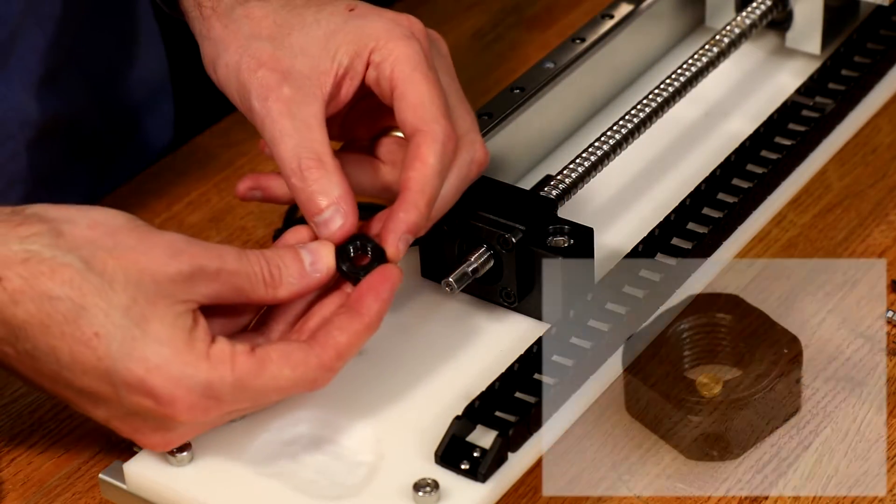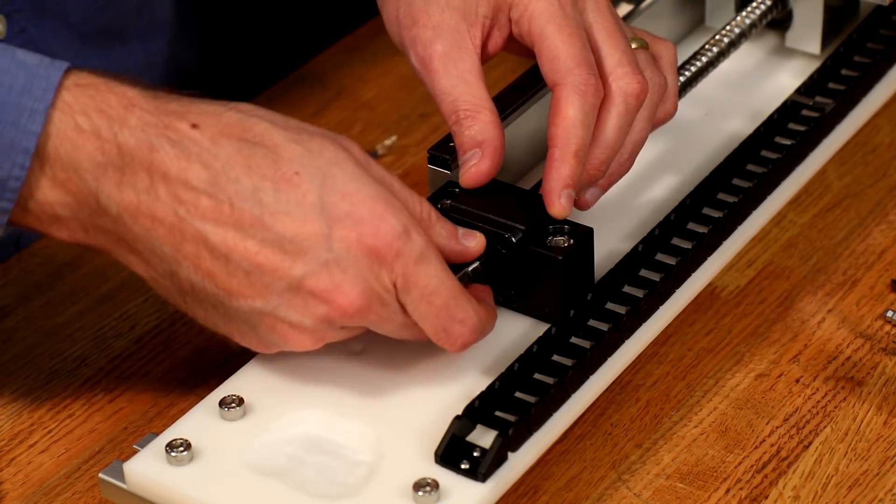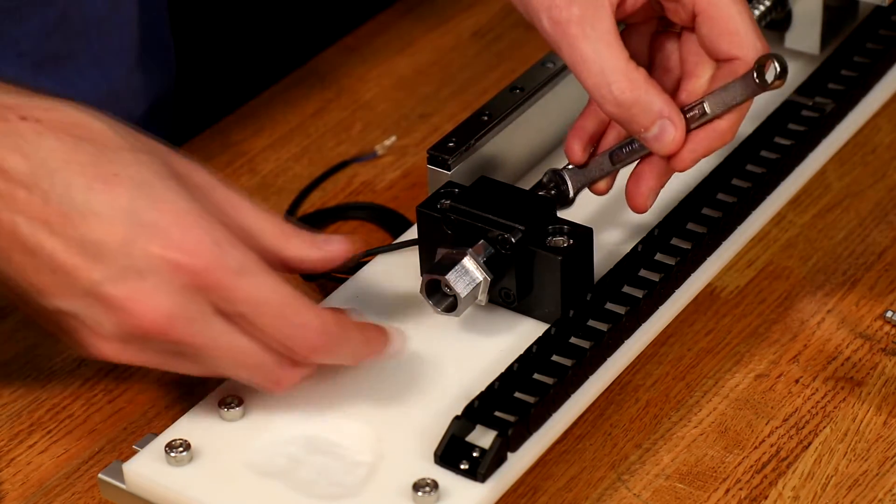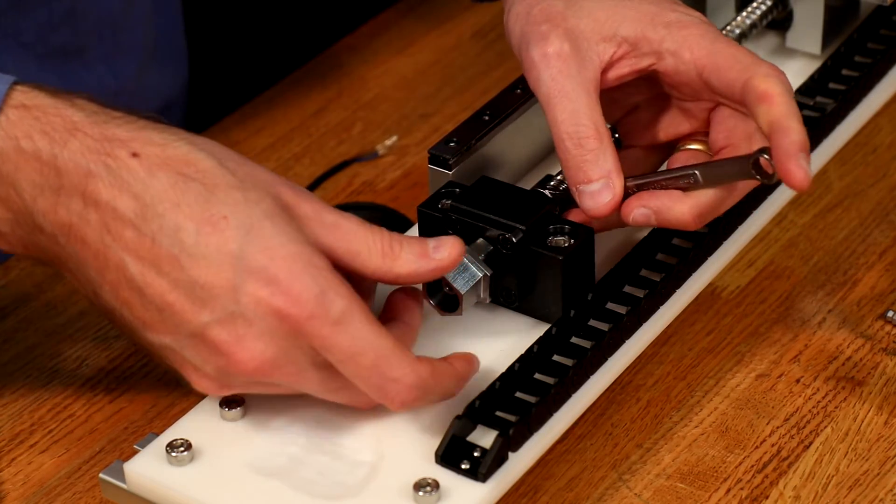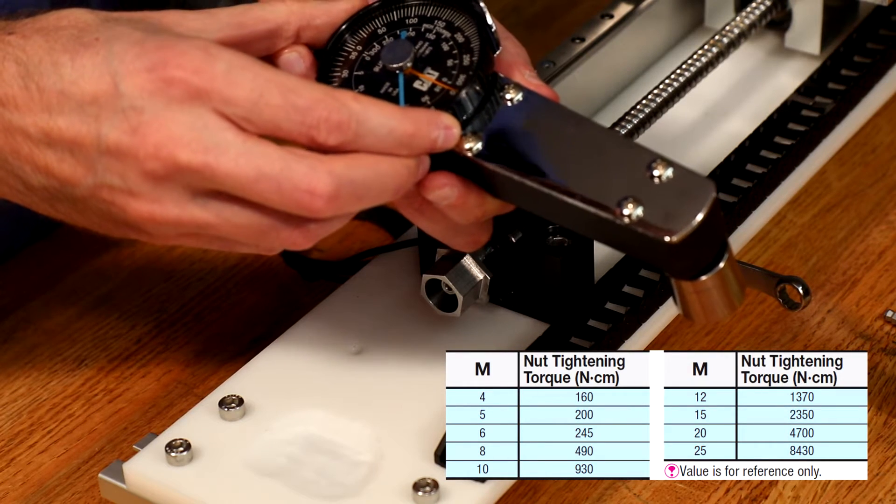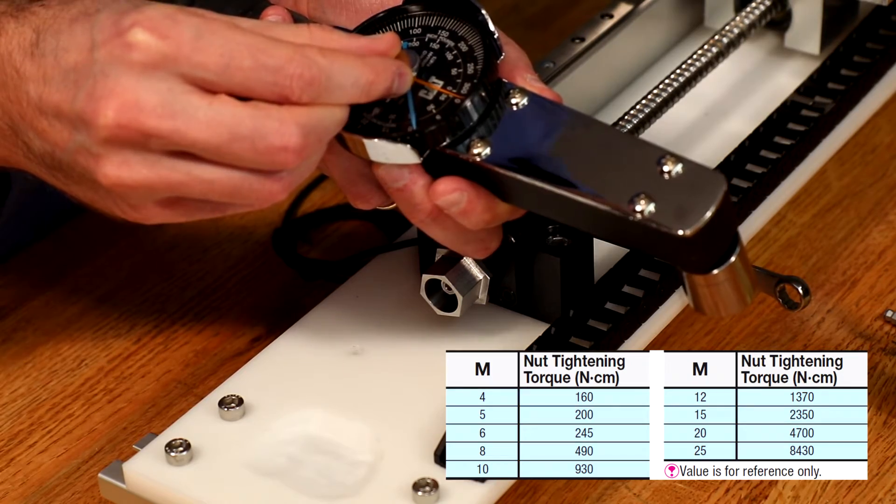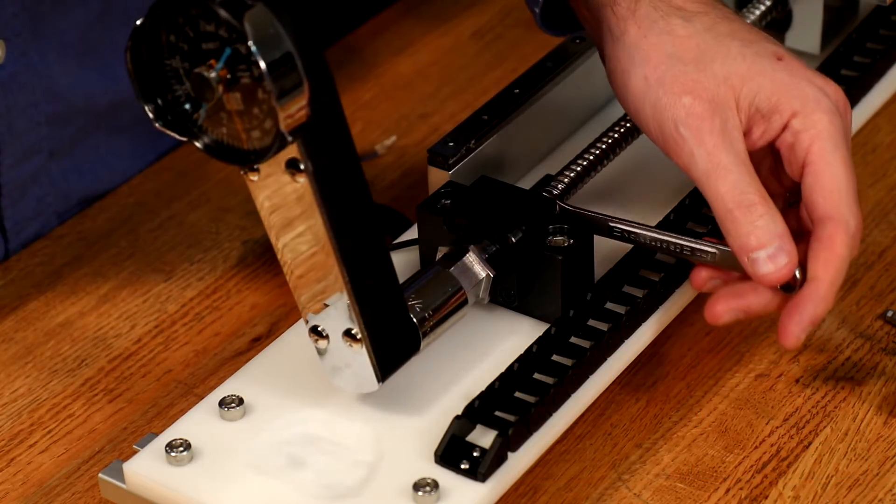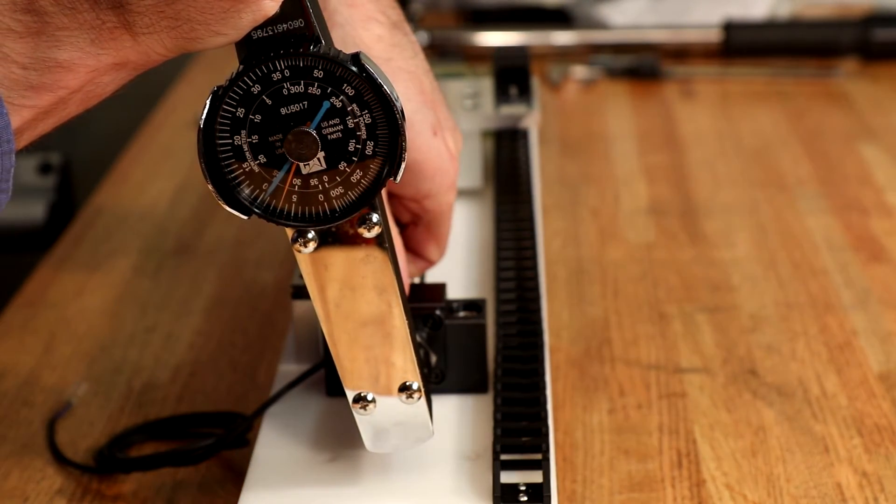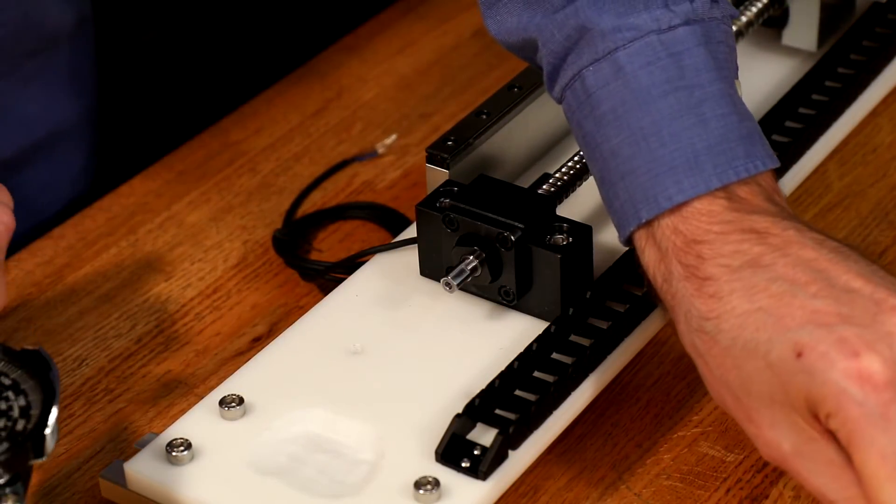Here is the retaining nut. It has a small brass insert that presses into the threads of the ball screw, securing the retaining nut in place. Our new tool now slips over the retaining nut, and the ball screw is held in place with a wrench on machine deflats. This is a 10 mm ball screw, and our torque wrench is set to 9.3 Nm. And that's it! The retaining nut on the ball screw is now properly torqued.